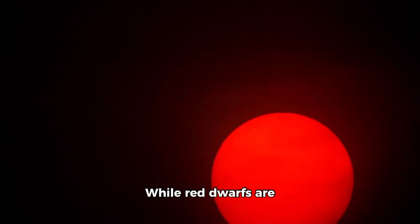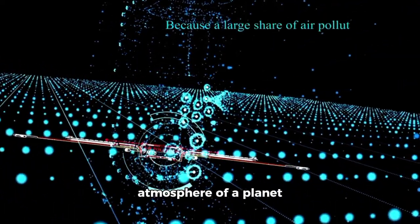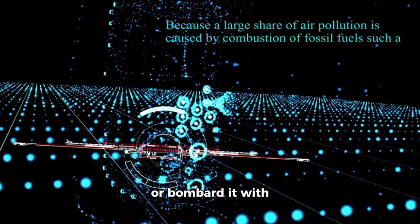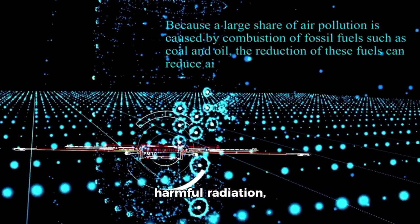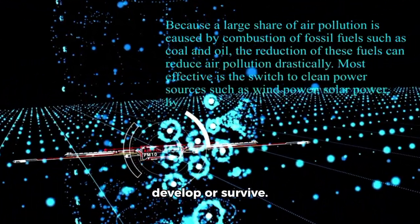But there's a catch. While red dwarfs are stable over time, they tend to be more active than the sun, frequently emitting powerful solar flares and radiation bursts. These outbursts can strip away the atmosphere of a planet or bombard it with harmful radiation, potentially making it difficult for life to develop or survive.